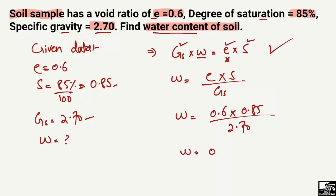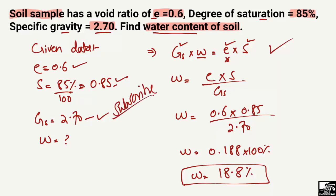Multiplying by 100%, it equals 18.8%. So this is the water content of the soil sample with specific gravity 2.70, degree of saturation 0.85, and void ratio 0.6. Hope you guys understood, and don't forget to subscribe to our channel for daily soil engineering videos. Thank you for watching.